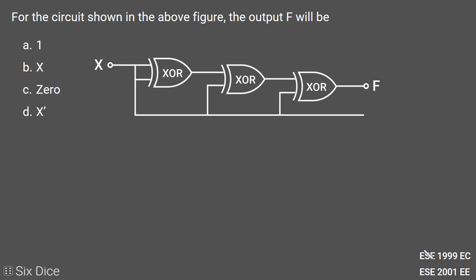Okay, this question has been asked two times in Engineering Service Exam: first in EC paper 1999 and second in Electrical paper 2001. In this question we need to find the output of this circuit F here.